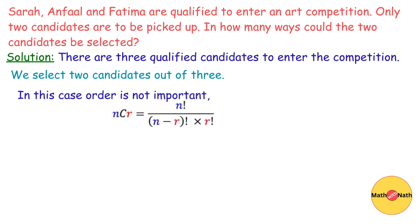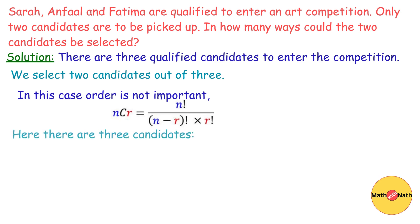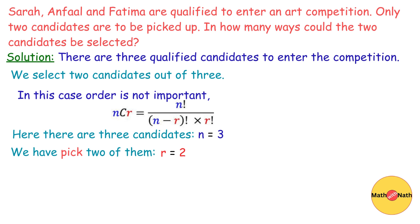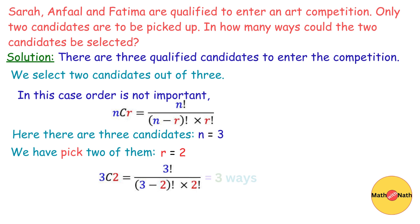Here n equals 3 and r equals 2. Substituting these values into the formula, we get 3C2 equals 3 factorial over (3 minus 2) factorial times 2 factorial. On simplification, we get 3 ways. Thank you for watching.